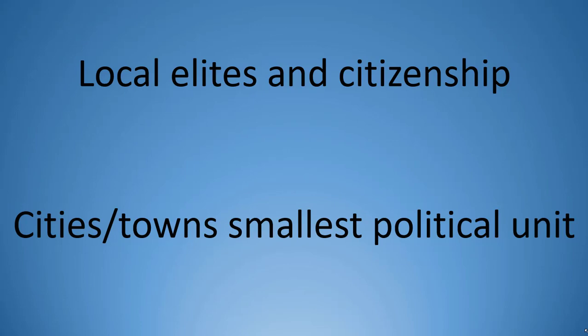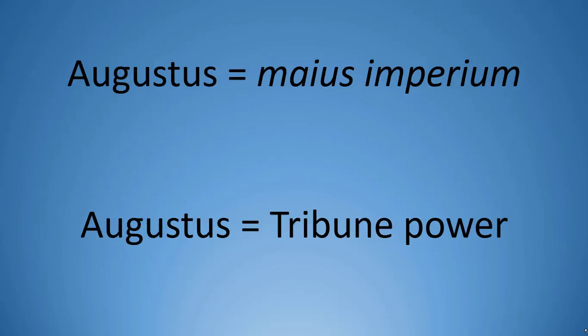Augustus held the position of consul for the first few years of his reign in order to hold imperium. Later, however, he stopped running for consul but was awarded maius imperium, a greater form of power that he held for the rest of his life. In 23 BCE, he was granted the powers of a tribune of the plebes without actually holding that office. He therefore held greater authority than any other official in Roman government and could lead armies and veto measures discussed by the Senate — giving the lie to his claims to want to bring back the glory days of the Republic.